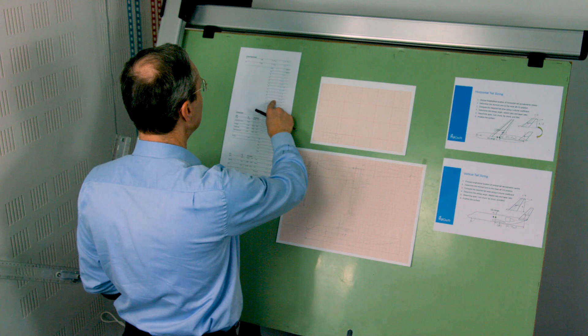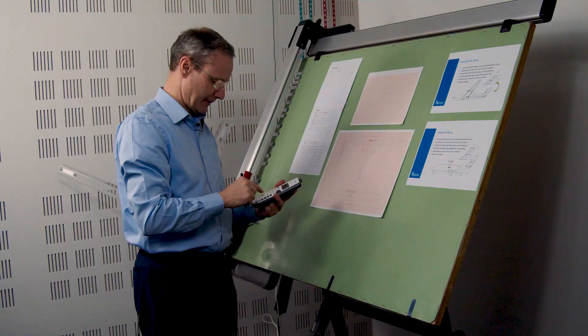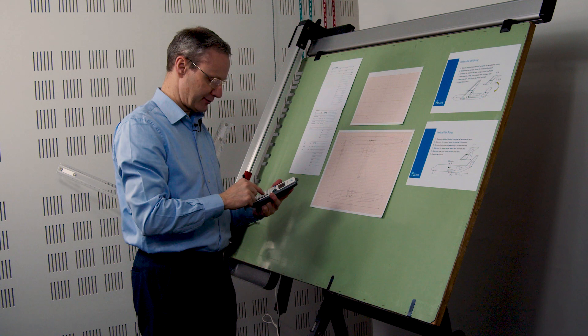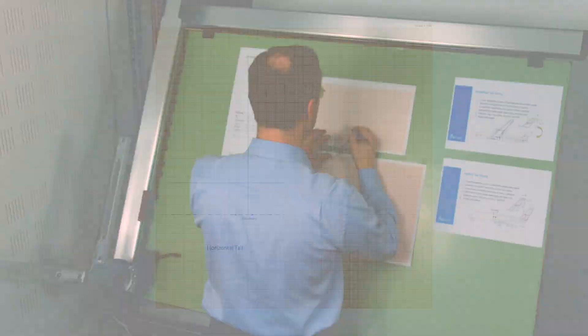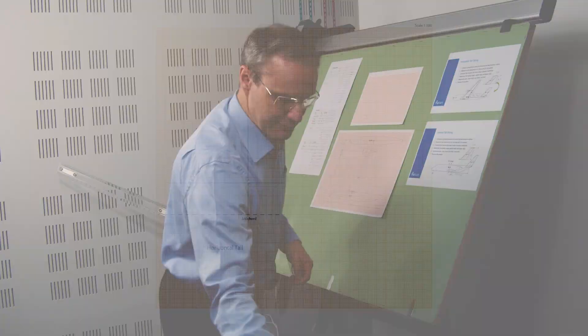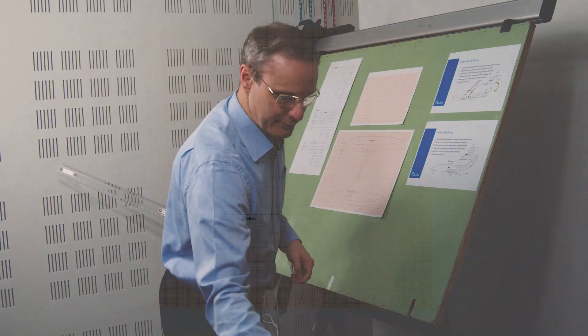I'm going to indicate the half span — 3.35 meters — and then add the root chord and tip chord. Be careful: this is the three-quarter chord line, so one quarter is behind it and three quarters is in front of it. A quick calculation: the root chord is 1.8 meters. 1.8 meters multiplied by 0.75 gives 1.35 meters in front of the three-quarter chord line, and 0.45 meters behind it — so here I have my root chord.